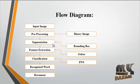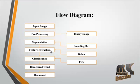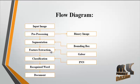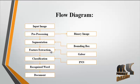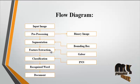In the segmentation, bounding box segmentation is carried out. Each and every letter is segmented using the bounding box. Then the segmented letter undergoes feature extraction. In the feature extraction, we apply the Gabor filter. The Gabor filter extracts features from each and every letter present in the word.